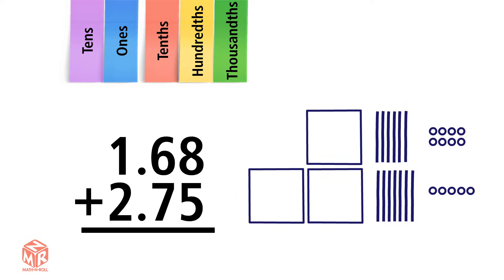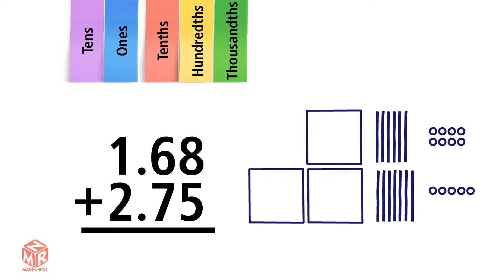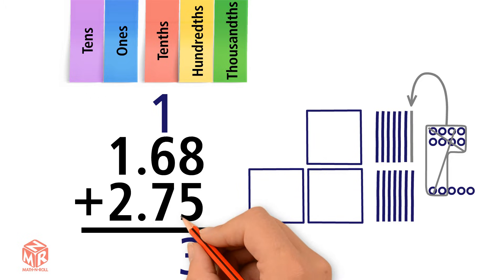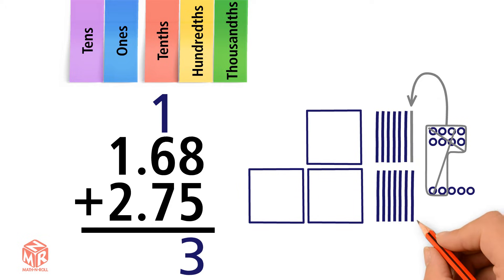We start adding from right to left, so we start with the hundredths. 8 plus 5 equals 13. 13 is more than 9, so we regroup. We're left with three hundredths, so we put that in the hundredths column. Now let's take a look at the tenths column. We have the one that we regrouped, the 6 and the 7. 1 plus 6 plus 7 equals 14.